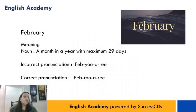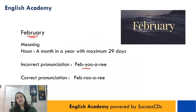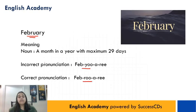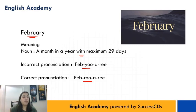The next word is F-E-B-R-U-A-R-Y. Log usually isse pronounce karte hain 'February', but iski correct pronunciation is 'February'. Aur iska matlab hota hai a month in a year with maximum 29 days. Toh aapke saal ka jo doosra mahina hota hai, woh 'February' nahi hota, woh hota hai 'February'.